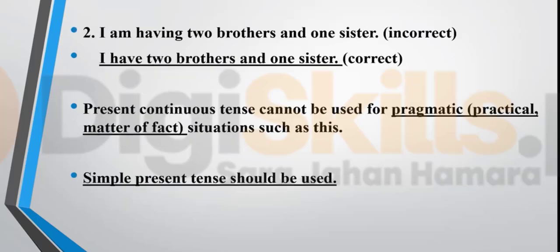'I am having two brothers and one sister' — this is a very common mistake. Present continuous tense is not used with 'have' when you're stating a pragmatic or practical matter of fact, a reality. For that, you use the present simple tense. You say 'I have two brothers and one sister.' Here 'have' is the first form of the verb, and 'I am having' is completely wrong.